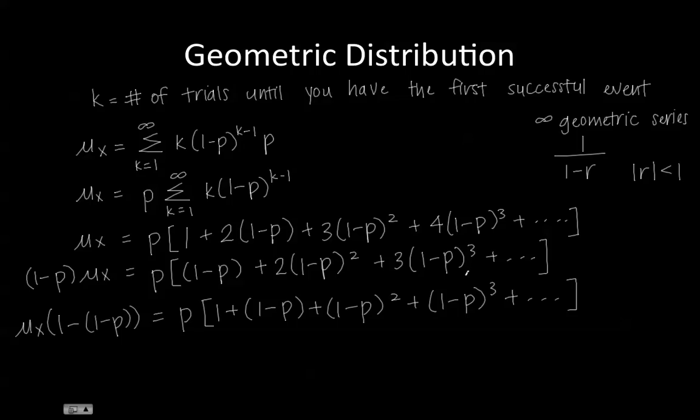So from here, we know that our rate 1 minus P is less than 1, so we can rewrite this using our formula 1 over 1 minus R. So what we get is P times 1 over 1 minus R. And then on this side, we get 1 minus 1 is 0 plus P.